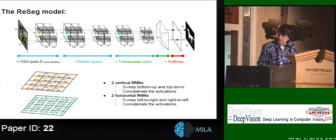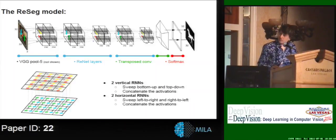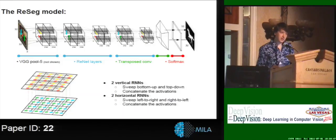On the bottom of the slide you can see a detail of the RNN layer. It's composed by four RNNs. The first two read the input vertically and we then concatenate their feature maps.